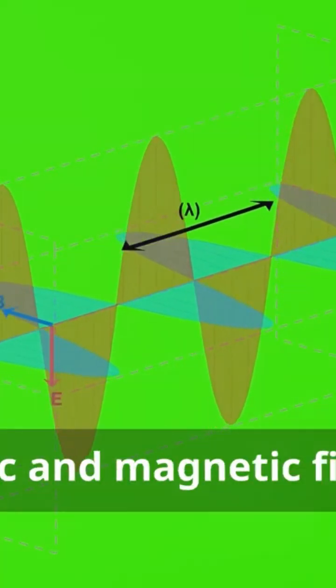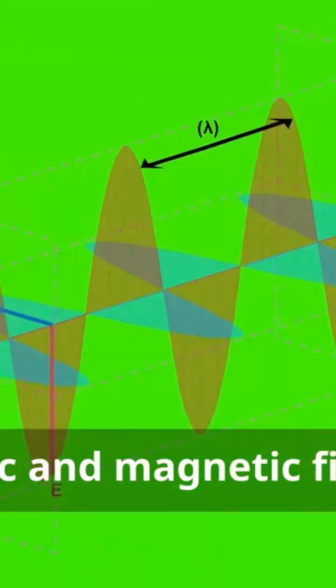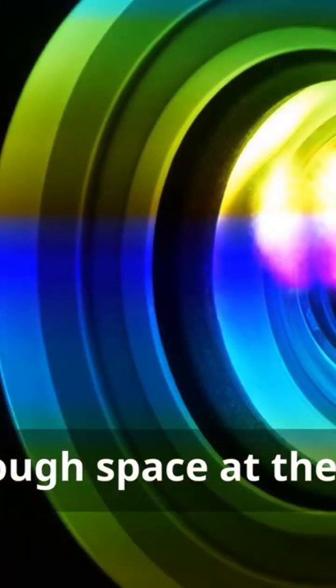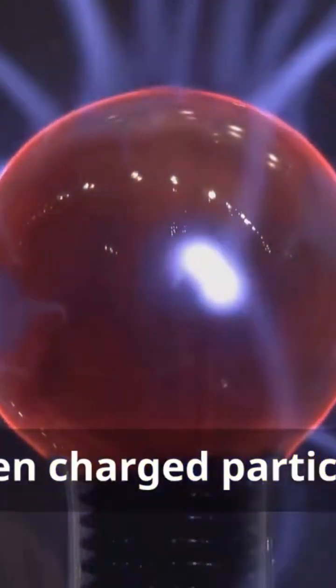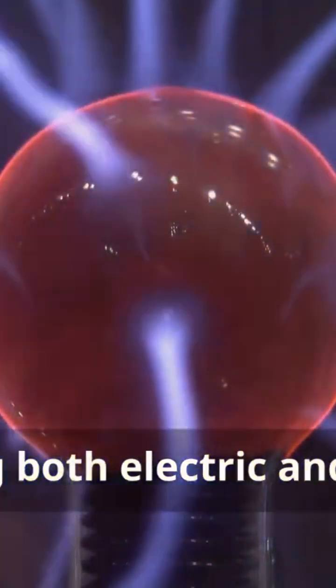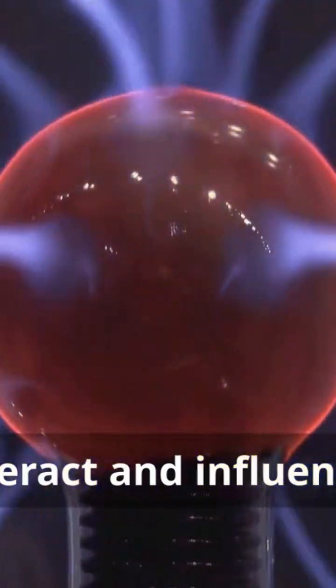Electromagnetic waves are disturbances in electric and magnetic fields that propagate through space at the speed of light. They arise when charged particles accelerate, generating both electric and magnetic fields that interact and influence each other.